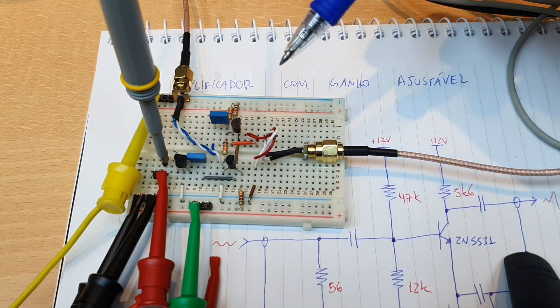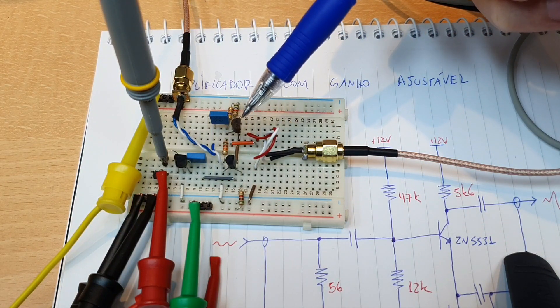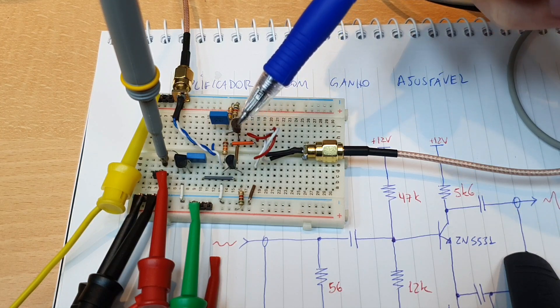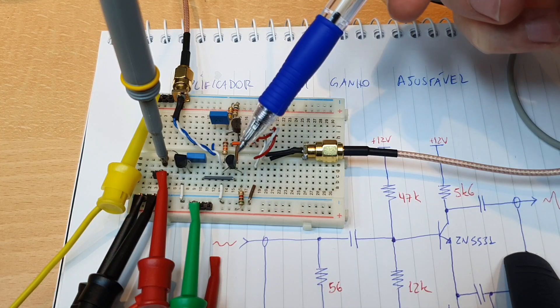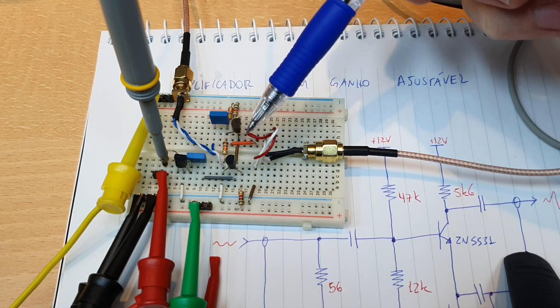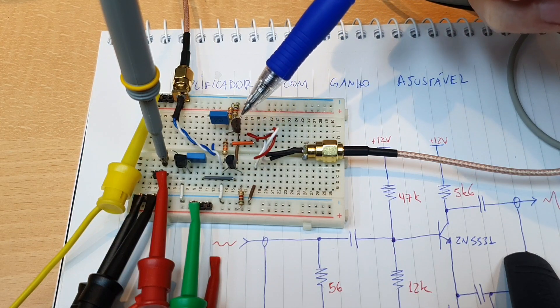This circuit is based on a common emitter amplifier. This transistor here is the amplifier working in a common emitter configuration and the biasing of this amplifier works with a current source here on the emitter. So the normal gain of this amplifier is almost zero.